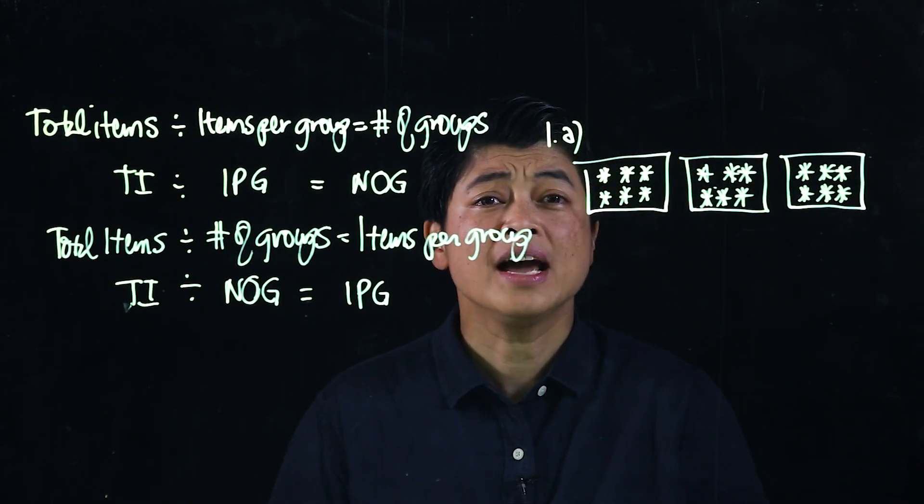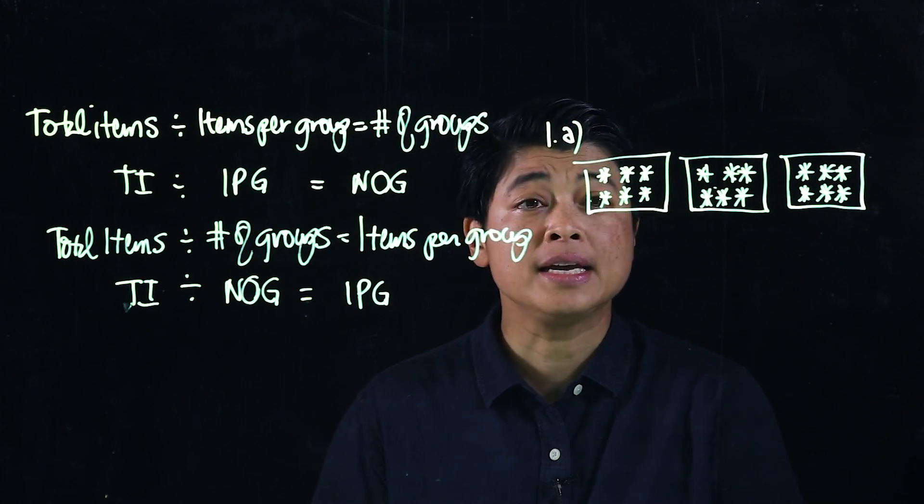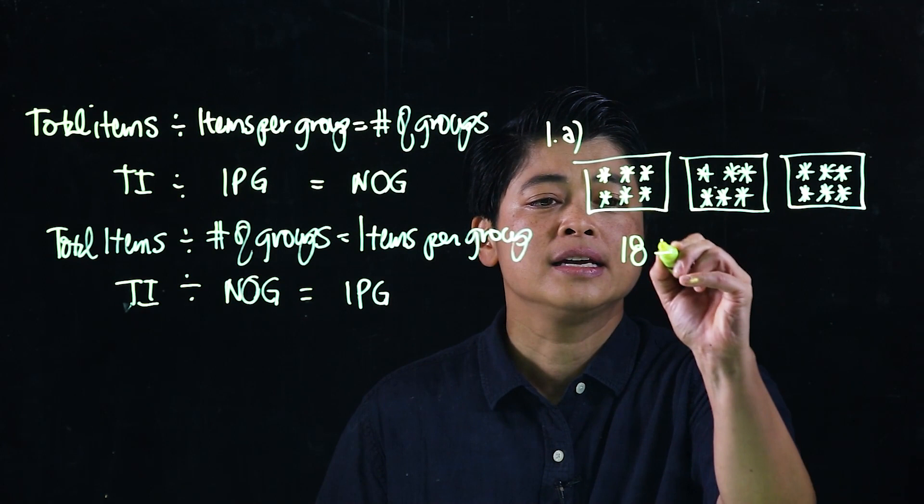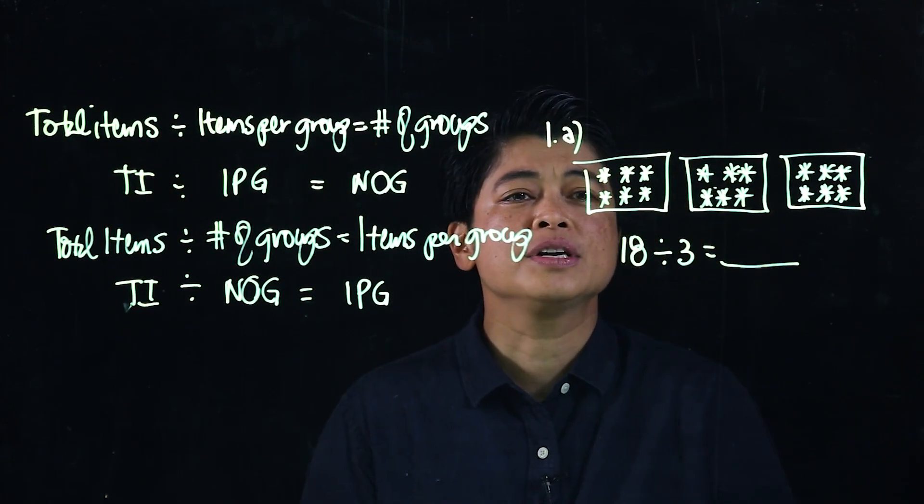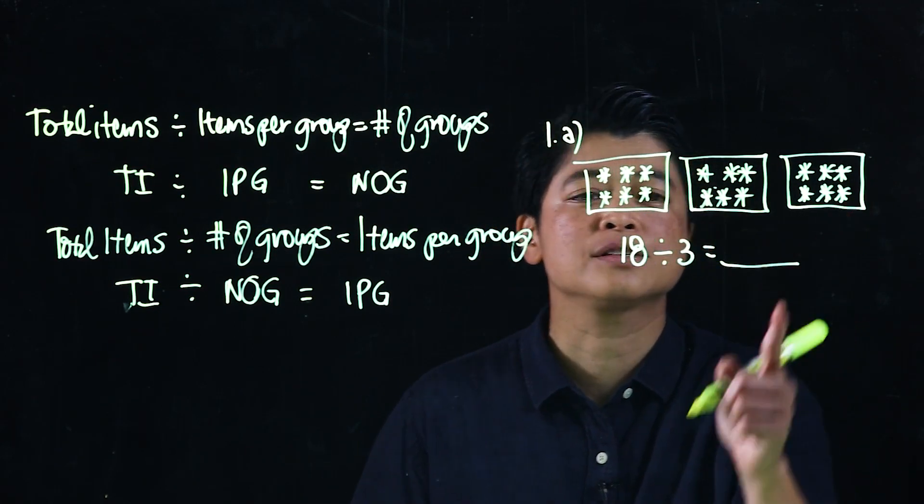For now the lesson is visual learning, which means if we look at this the equation says 18 divided by three equals blank. The 18 that's inside we divide into three cats, which means what's inside is six.